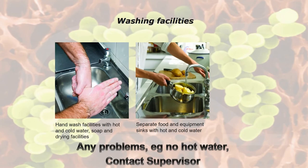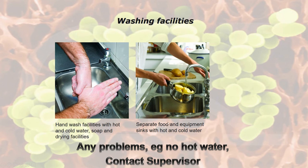Regarding washing facilities, you must by law have a hand washing sink — and this is a question that sometimes comes up. What must a hand wash facility have as a minimum? It must have hot and cold water, soap, and drying facilities. Keep other sinks separate: food and equipment sinks with hot and cold water, with equipment sinks kept separate from food sinks. If you have any problems with the hot water or the sink is not working, you must contact your supervisor.